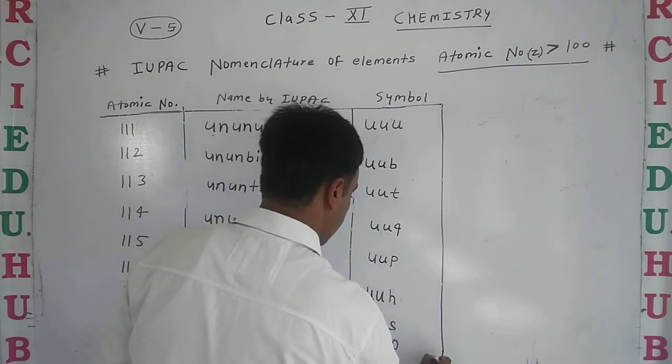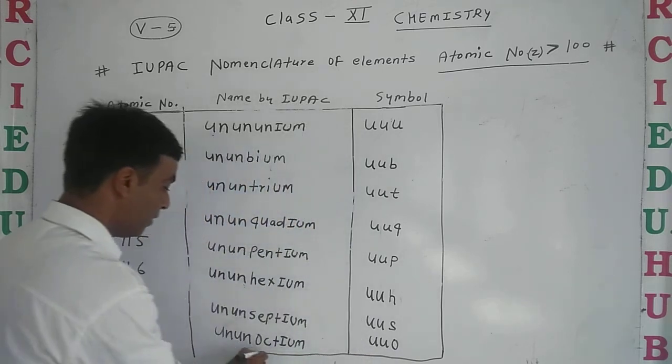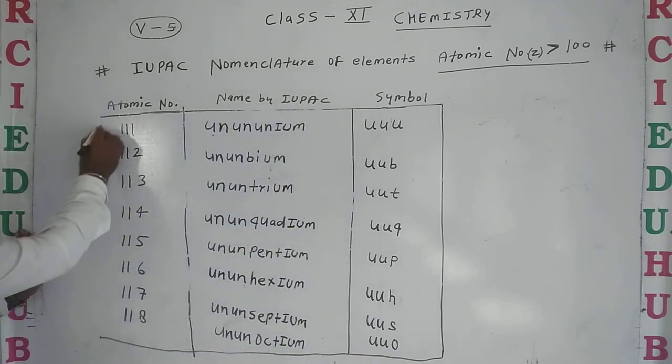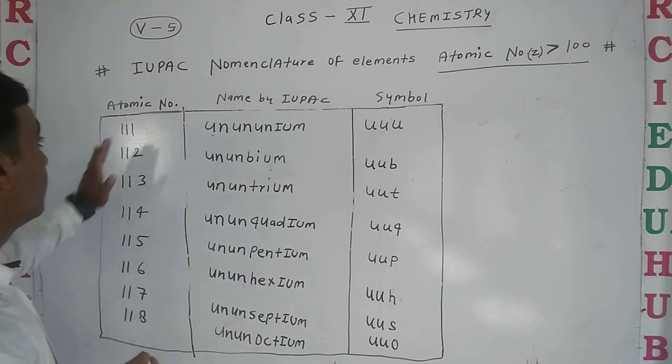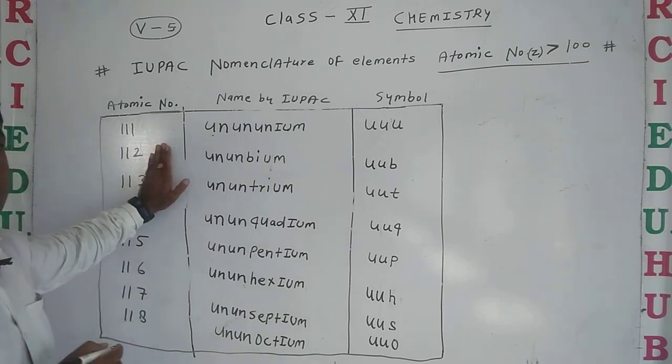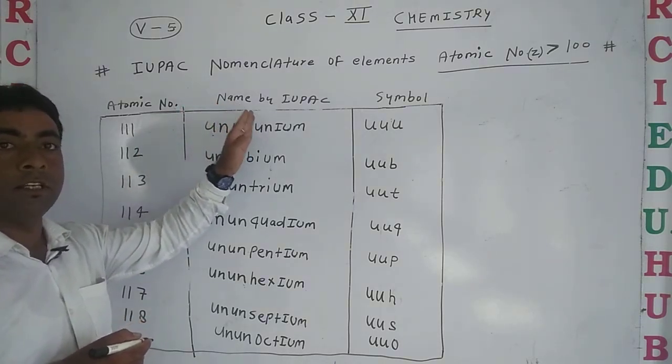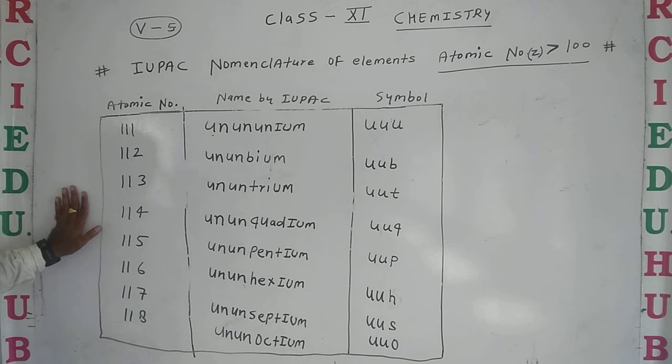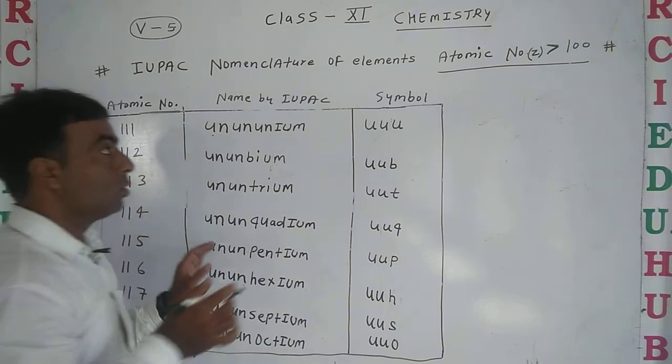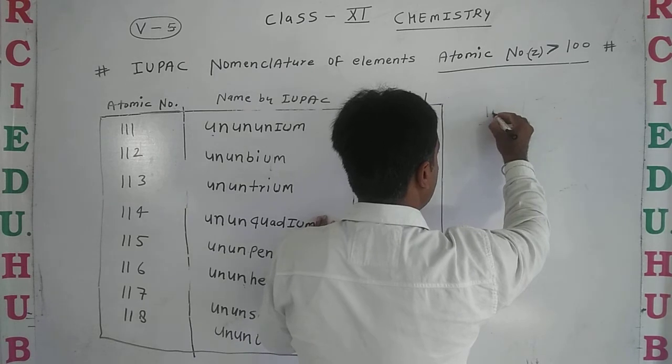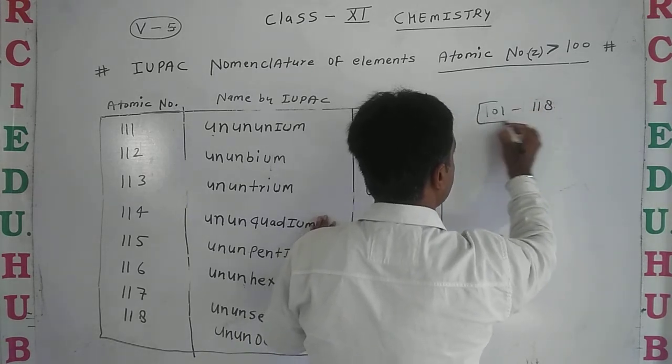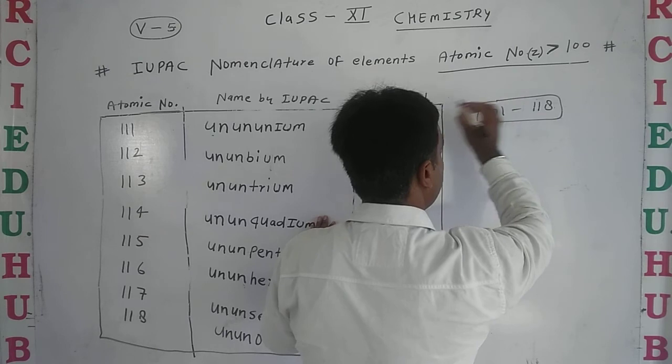That is the complete naming of elements in the periodic table. 118 elements are discovered today. IUPAC names are complete according to IUPAC rules. In previous class we saw 101 to 110, and now eight elements we discussed in this video.